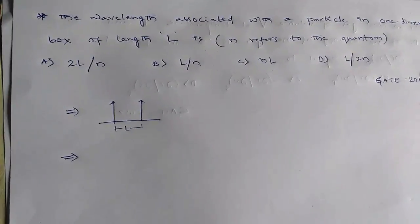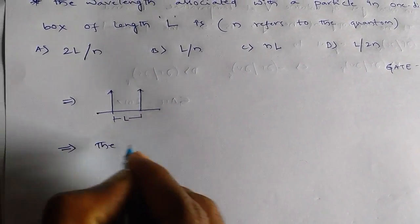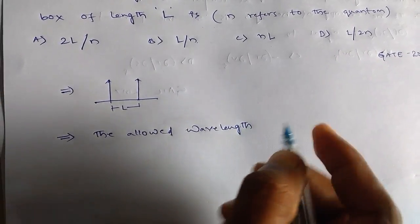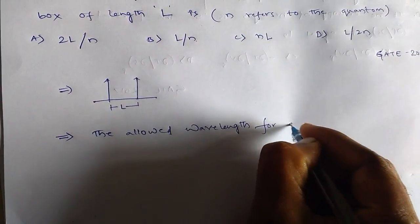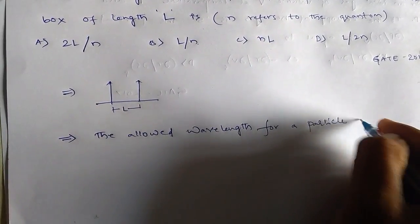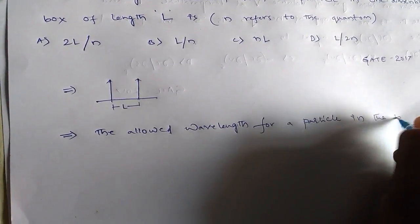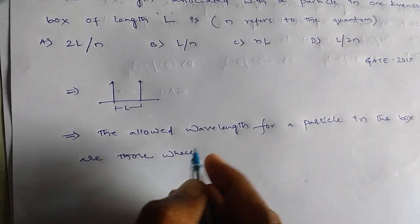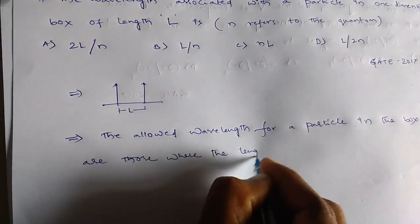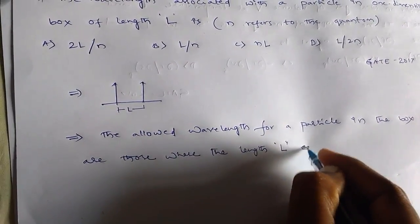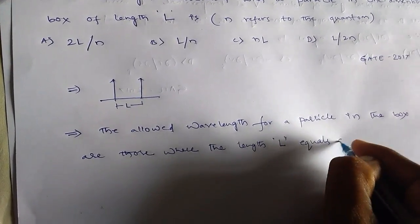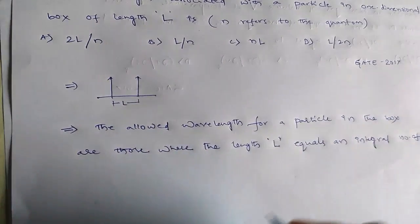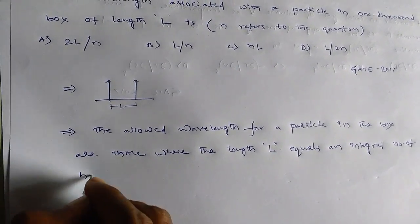And here the allowed wavelength for a particle in the box are those where the length L equals an integral number of half wavelengths.